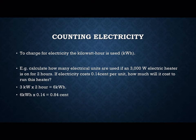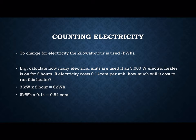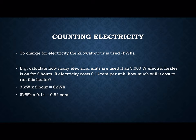We need to be aware of how electricity bills are calculated. To charge for electricity, the kilowatt hour is used. To calculate how many electrical units are used: if a 3,000-watt electrical heater runs for 2 hours, first convert from watts to kilowatts by dividing 3,000 by 1,000 to get 3. Then multiply by 2 to get 6 kilowatt hours. If electricity costs 0.14 cent per unit, multiply 6 kilowatt hours by 0.14 to get 0.84 cent. Write that down and calculate it yourself.